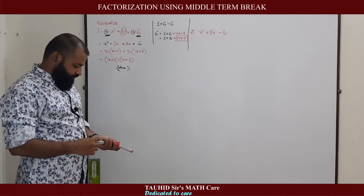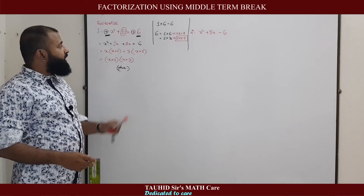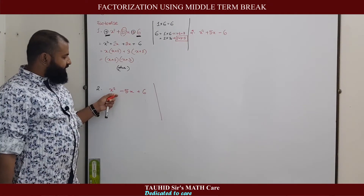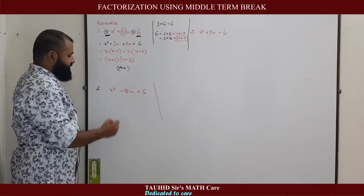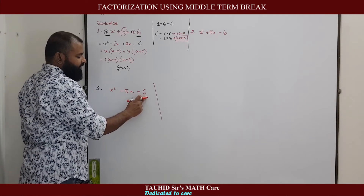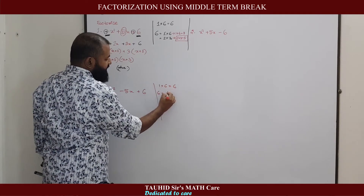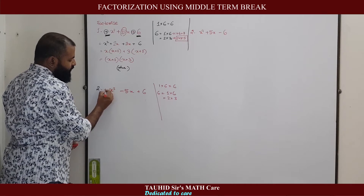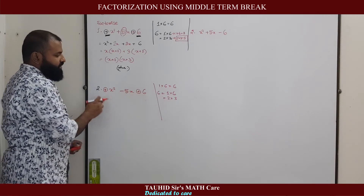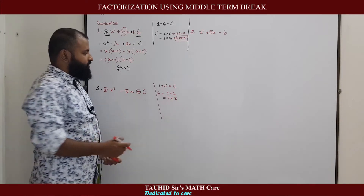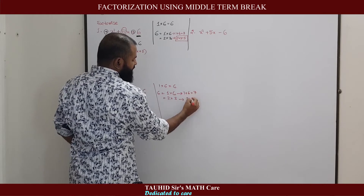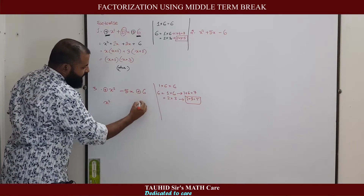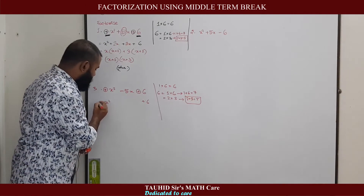Now if the sign before 5x is minus instead of plus, what will happen? If the expression is x² − 5x + 6, the first step is to multiply the coefficient of x² and the constant term: 1×6 = 6. This can be factorized as 1×6 or 2×3. We check the signs in front of x² and the constant term — both are positive, same sign, so we add the factors. Adding 1+6 gives 7, adding 2+3 gives 5, just as in question 1. The first term and third term remain as they were.